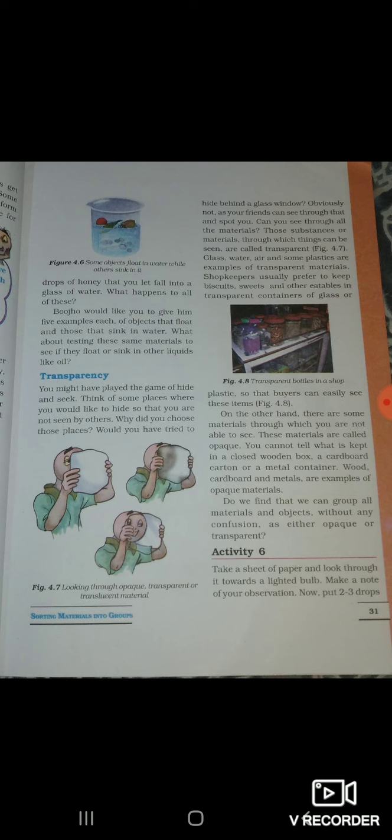Translucent object. Activity 6. Take a sheet of paper and look through it towards a lighted bulb. Make a note of your observation.